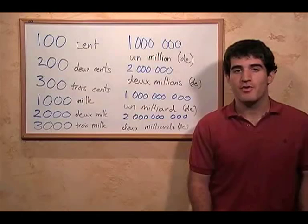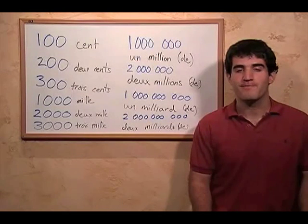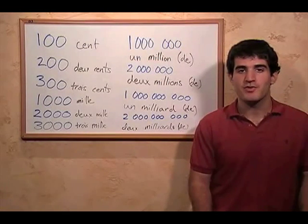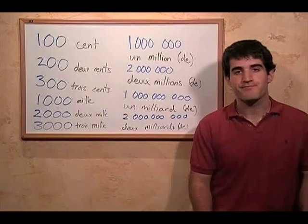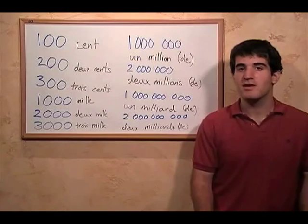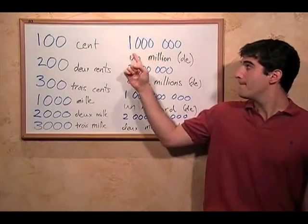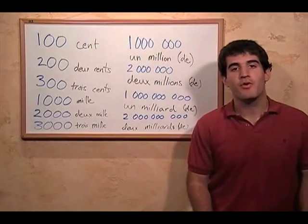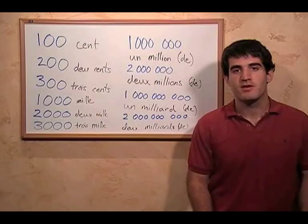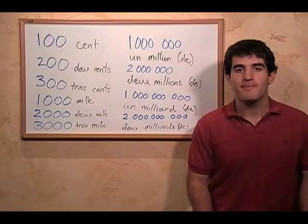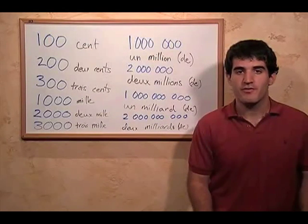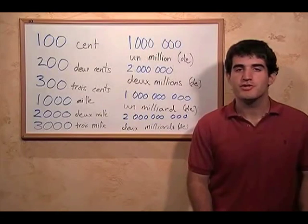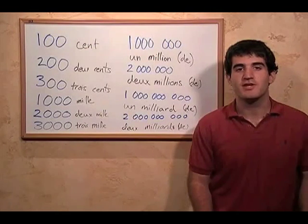One other point is that when we write the number out, we don't use commas between three digits like we do in English. We either leave a space or we can put a point. When we write a comma, that's what we use to separate the number from the decimals, which is what we use a period for in English. So just be aware of this difference of notation.